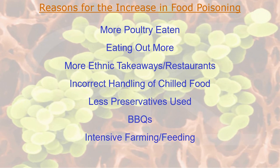Why has food poisoning increased so much? The first reason is that more poultry is eaten. Poultry is very cheap — you can pick up a chicken for about £3.50 that can feed a family of four. But most, if not all, poultry chickens are infected with something called Campylobacter, which causes food poisoning, mainly due to the way they're raised.